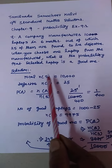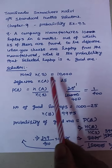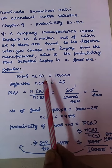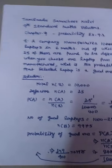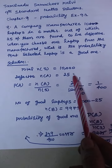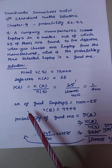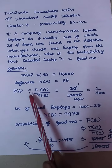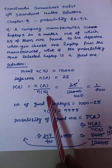Solution: N of S is equal to total number of manufactured laptops, which is equal to 10,000. N of A is the defective laptops, which is 25 numbers. P of A is the probability of getting a defective one. P of A is equal to N of A divided by N of S.